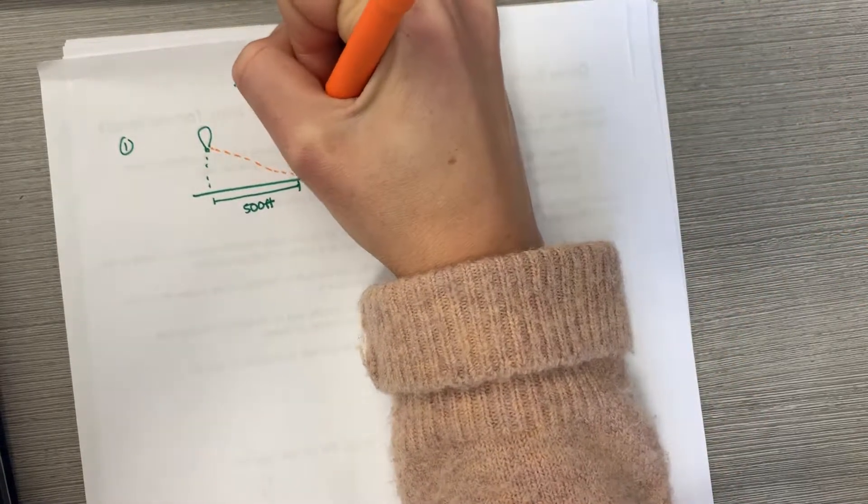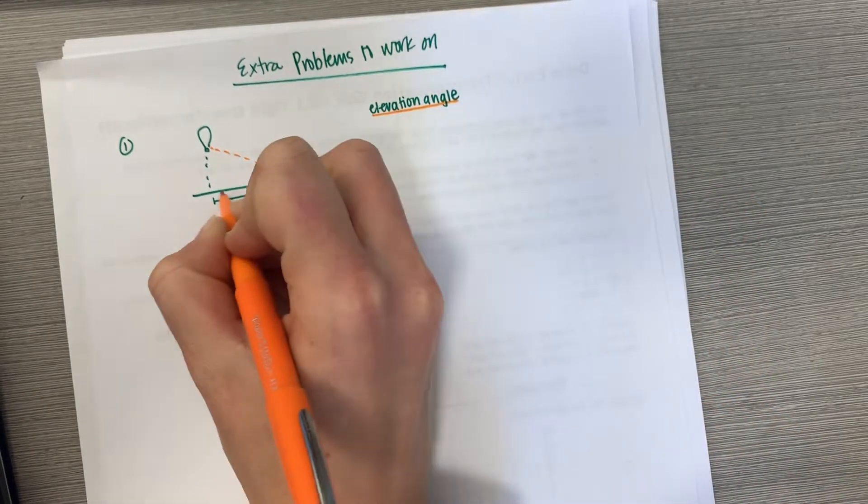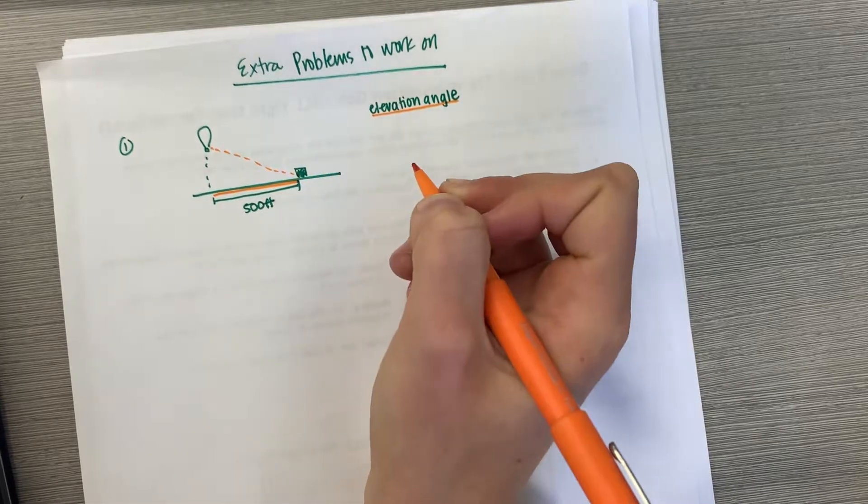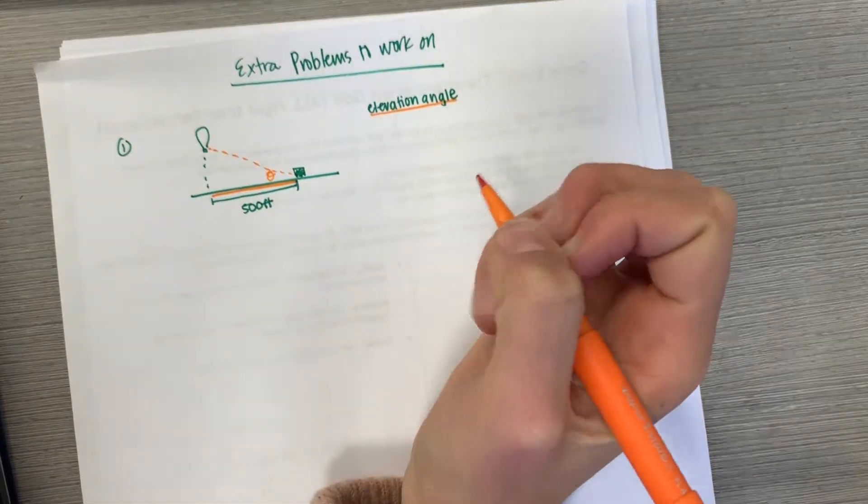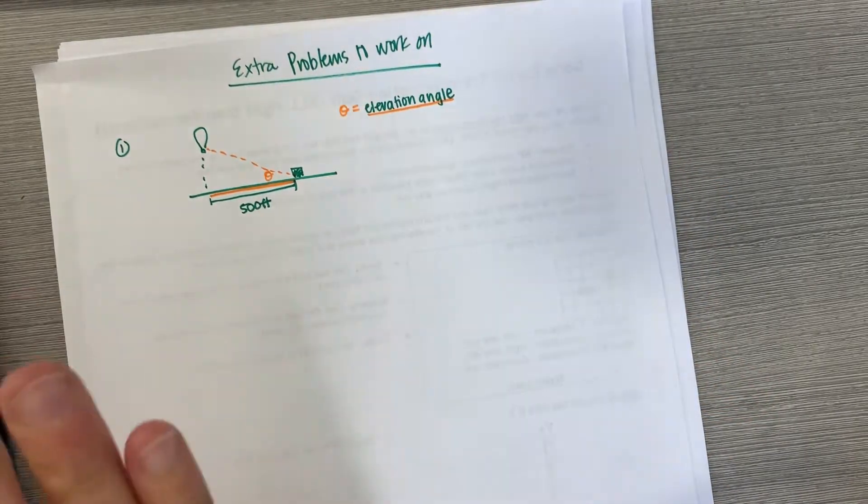That means from the rangefinder we're looking for the angle between the horizontal line of sight, which is the ground here, and the object itself. So that theta is there. Theta here is your elevation angle.